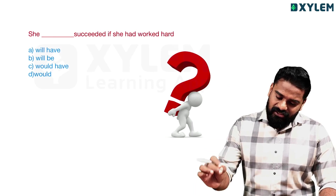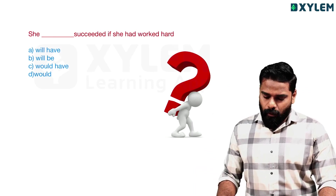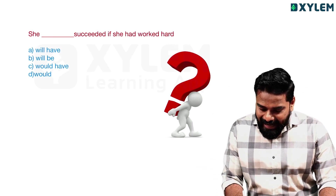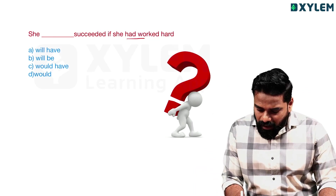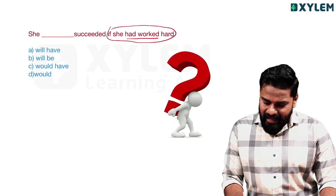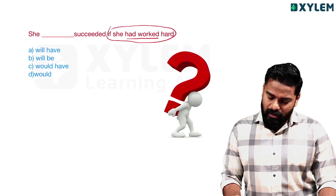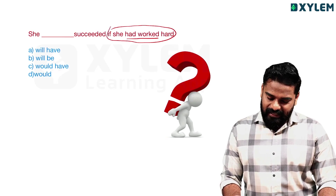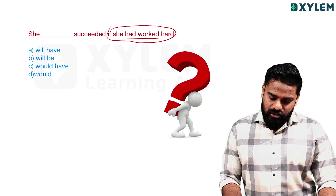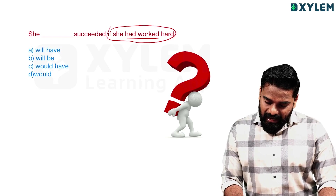She succeeded. If she had worked hard — past perfect in the if clause — this is the third condition.